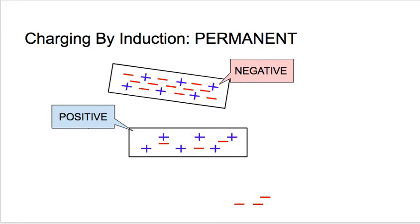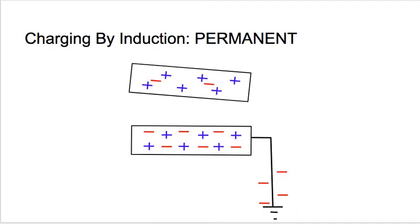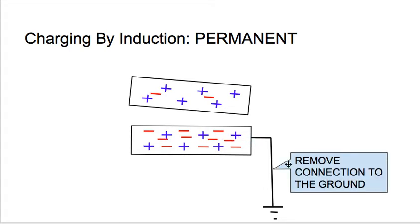Now let's look at what would happen if we switch this up and start off with a positively charged object. Here's our neutral object with a connection to the ground. The ground is a big reservoir of charges, so there's certainly no shortage of negative charges that can come up or go down. As this positively charged object gets closer and closer to the neutral object, its overall positive charge attracts and draws up negative charges from the ground, and you can see those negative charges flood in.